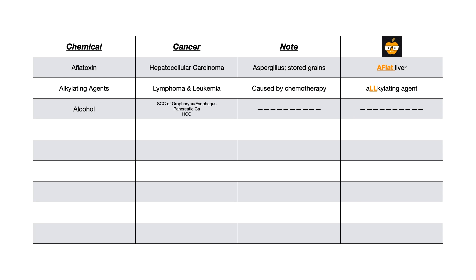Now let's talk about alcohol. Alcohol causes squamous cell carcinoma of both the oropharynx and the esophagus, pancreatic carcinoma, and hepatocellular carcinoma. Because alcohol is something people can memorize quite well, I don't have a strong mnemonic. On test day, questions probably won't focus on alcohol since its adverse effects are well known — if they're going to ask about one of these chemicals, chances are it'll be something less obvious.